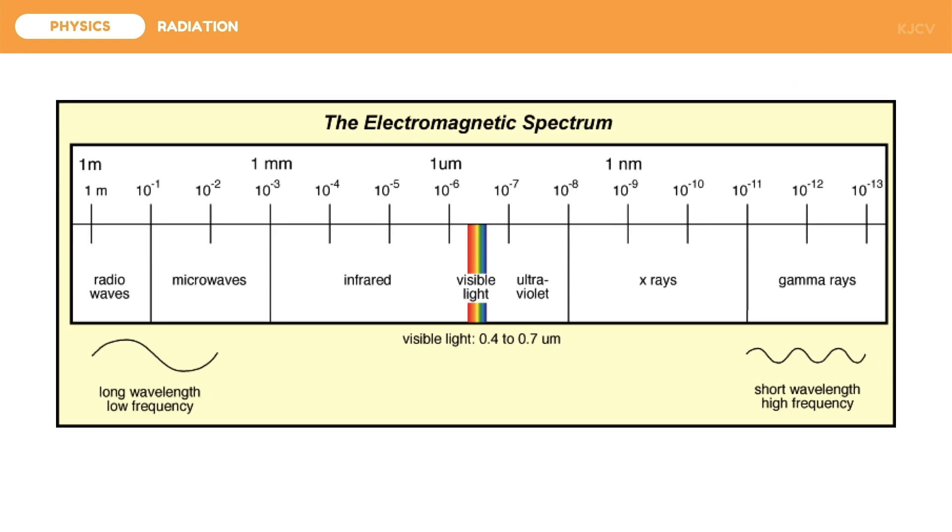We have previously discussed the components of the electromagnetic spectrum and their practical uses. Although generally beneficial, electromagnetic waves may pose some hazards, especially on organisms. As we have discussed from the past lesson, EM waves are arranged based on their wavelengths.